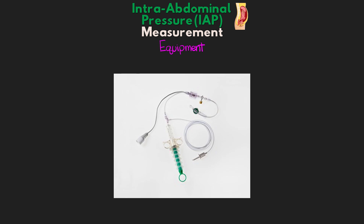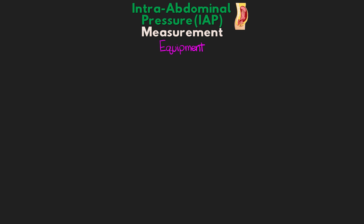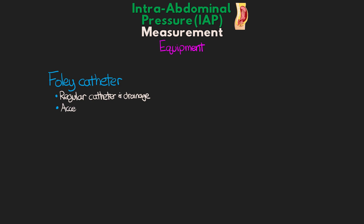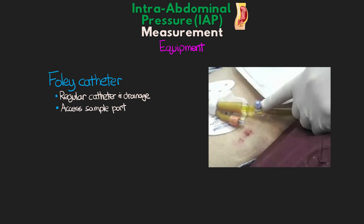So let's talk about the equipment that's needed. The first thing is going to be a Foley catheter. Your patient is going to need to have a Foley catheter in place — they probably already do, but in the event that they don't, one will need to be placed. It doesn't have to be any special Foley catheter. For this simple setup, we're actually going to be accessing the sampling port on the drainage tubing.